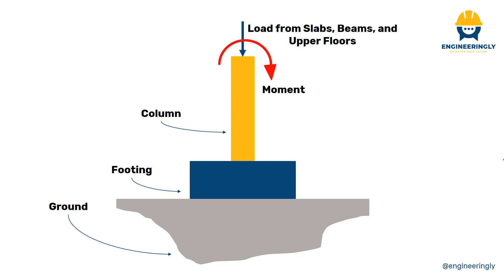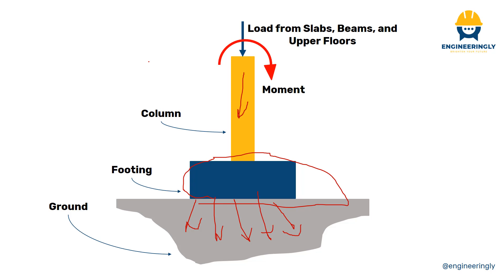Hello everyone and welcome back to Engineeringly. In today's video we are going to discuss how to design an isolated square footing using ACI 318. As you can see in the figure here, the footing is responsible for supporting the loads which come from the column, from the slabs and the beams. Besides that, there might be moments which the footing needs to support in order for the structure to be stable and strong.